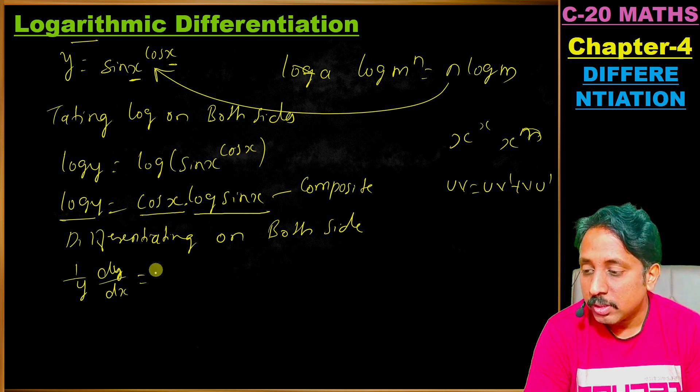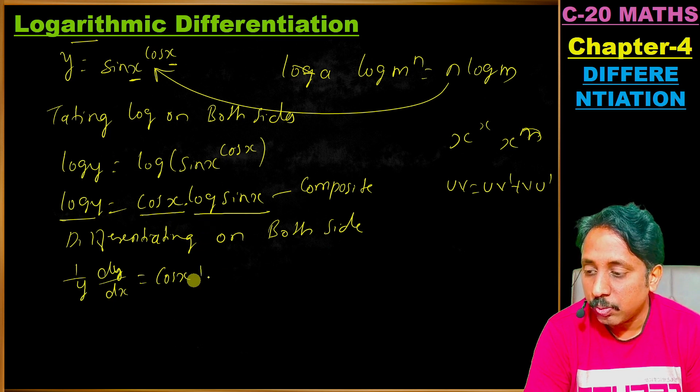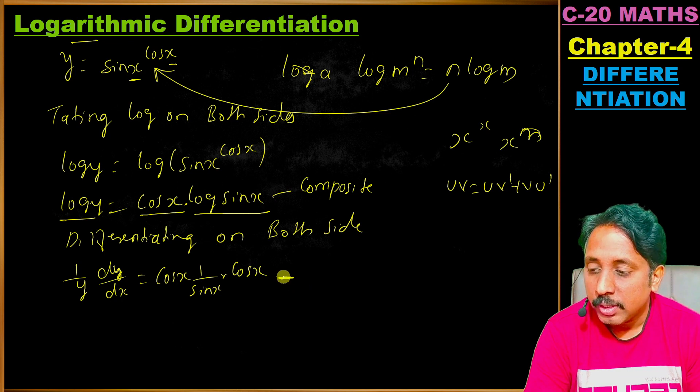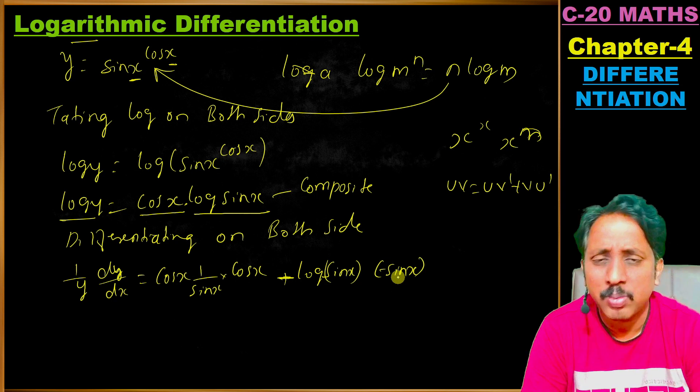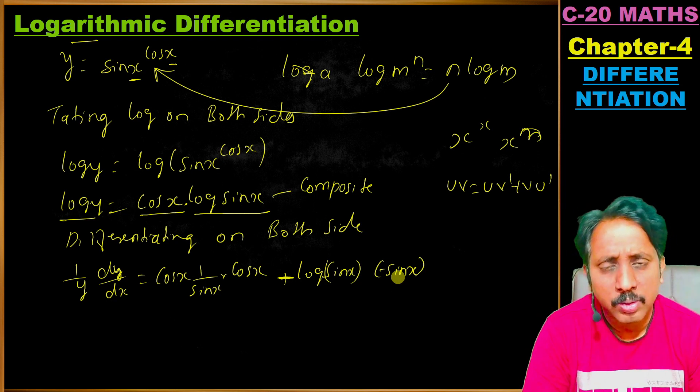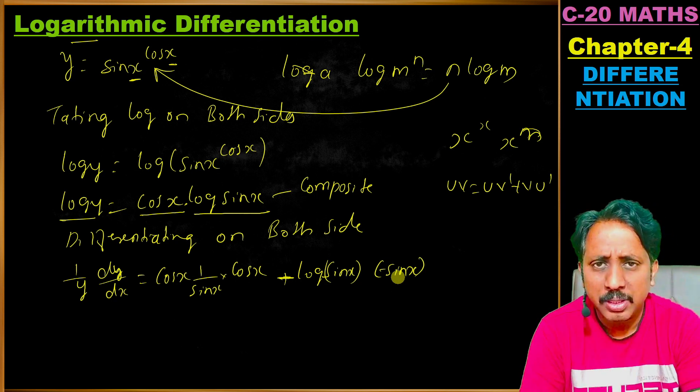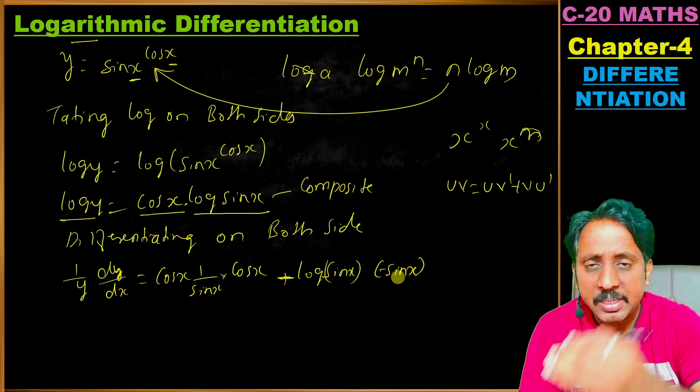Using product rule u v dash plus v u dash: first function is cos x, second is log sin x. So we get cos x times (1 by sin x times cos x) plus log sin x times (minus sin x).